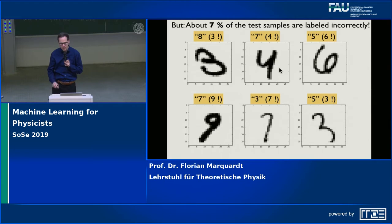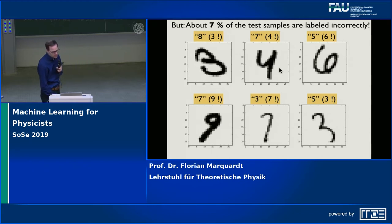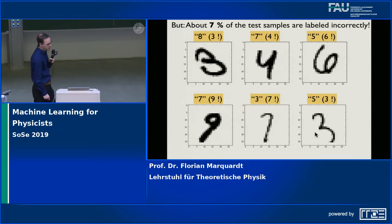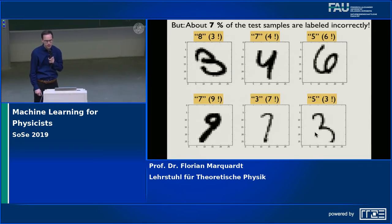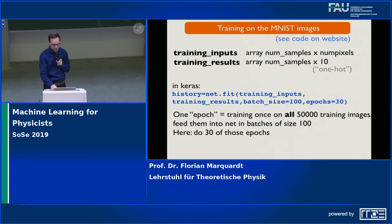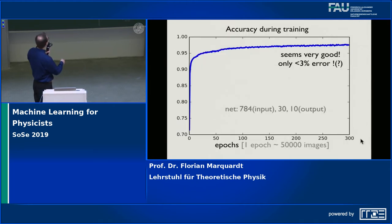We learned several things like one-hot encoding and categorical cross-entropy as a cost function. But when we implemented it, we stumbled upon some interesting behavior. These are images of digits where the network actually misclassifies them, and if we count for the numerical experiment we have been doing, how many are misclassified, it was about 7%, in spite of the fact that the accuracy during training seemed very good — only 3% error on the training samples.